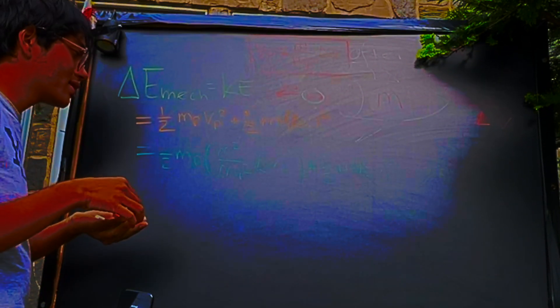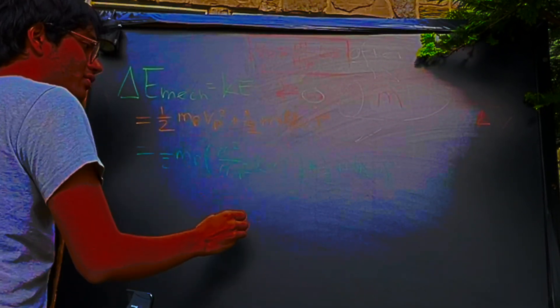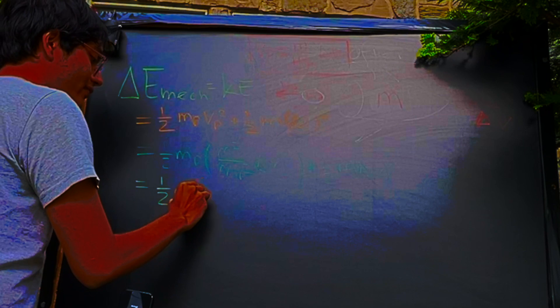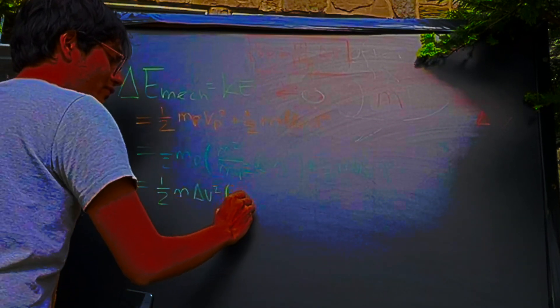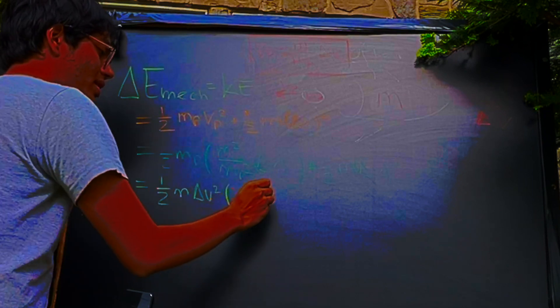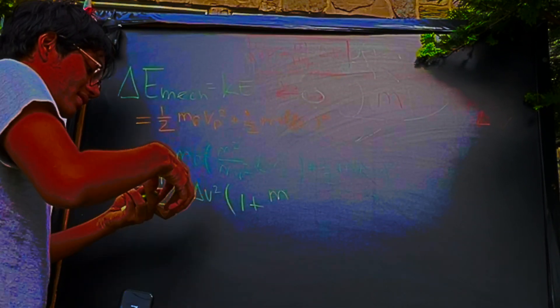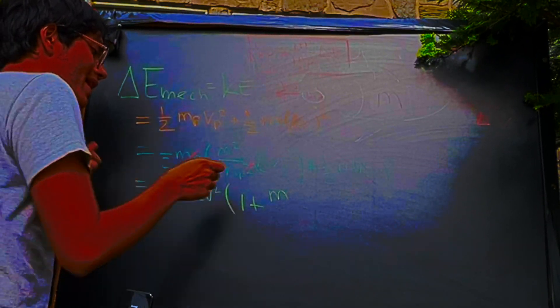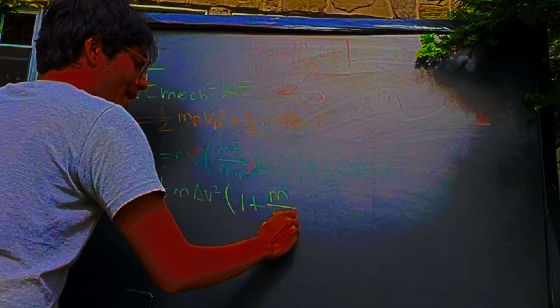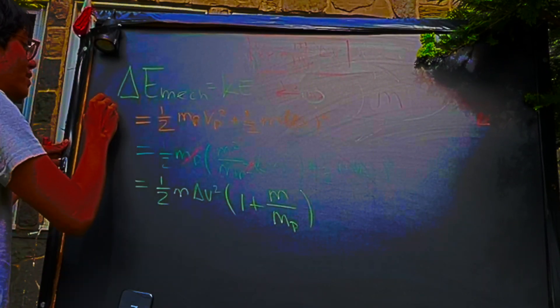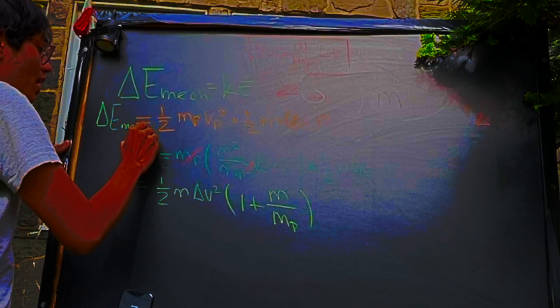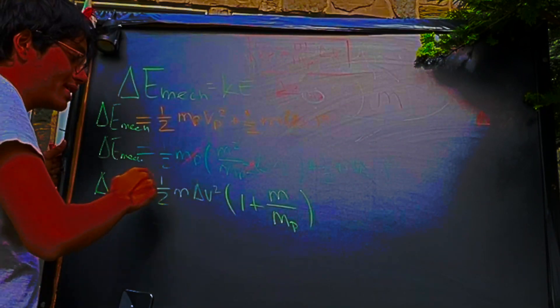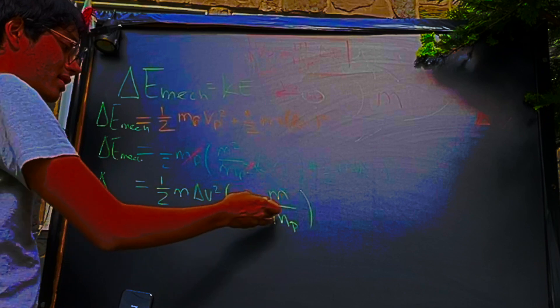And so now what can we do? We can just go ahead and factor out this common factor, right? Half m delta v squared. So if I go ahead and factor that out, half m delta v squared, what am I going to be left with? Well, I'm going to be left with one for this term over here. And for this term, I'll be left with the mass of the propellant. Since this cancels out, what do you see? This mass cancels out with this square. And so I'll be left with mass of the rocket divided by the mass of the propellant. That's going to be the total energy, the total change in mechanical energy of the system.